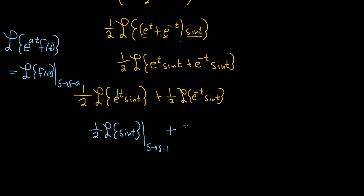For the second term, we have plus one-half times the Laplace transform of sine of t. We'll do a shift here too. Since a is negative one, it's s minus negative one, so it becomes s plus one — minus and minus is plus.